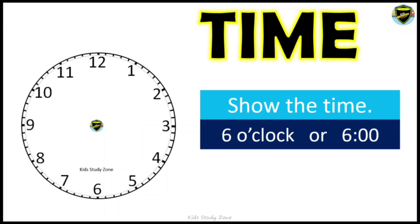Now show the time for 6 o'clock. From the center point, draw a line — the minute hand — towards number 12. Then again from the center point, draw a hand pointing towards number 6. You can see a straight line formed — this is 6 o'clock.